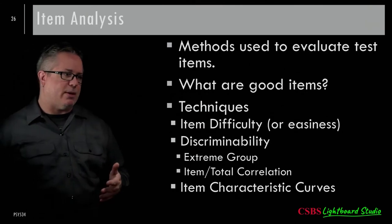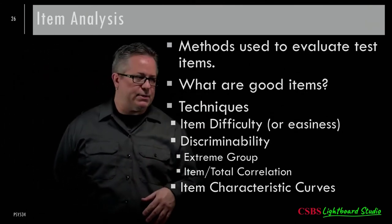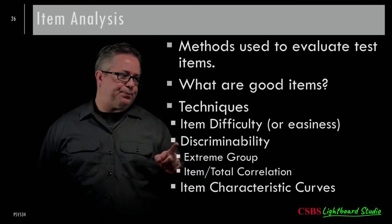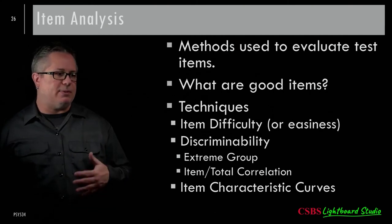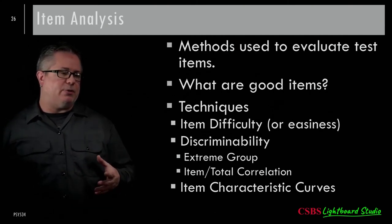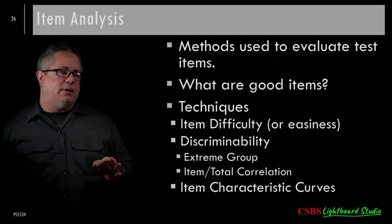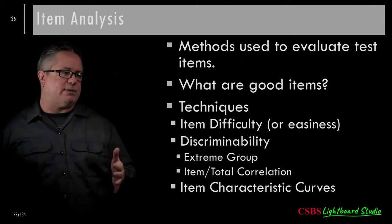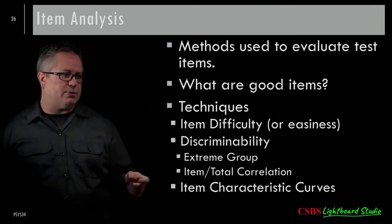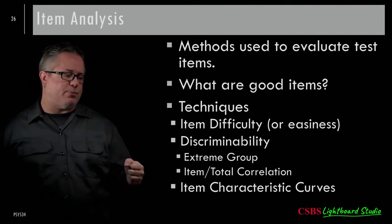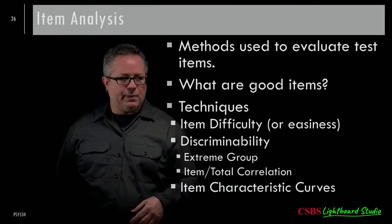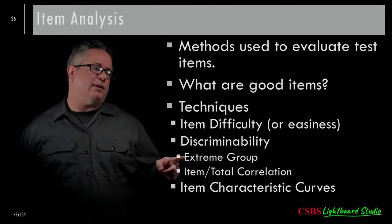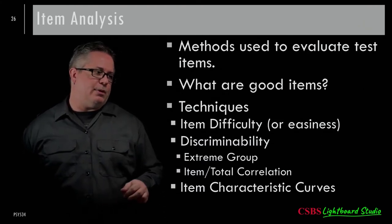Item difficulty gets lost in the shuffle when thinking about psychometrics and factor analysis, but it's important. In classical test theory, rather than looking at factors and loadings, we tend to look at things more simply. Two common approaches for discriminability are the extreme group method and the item-total correlation method.